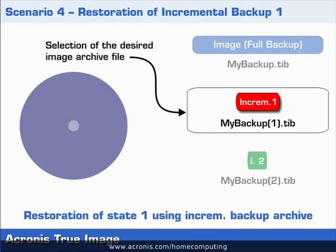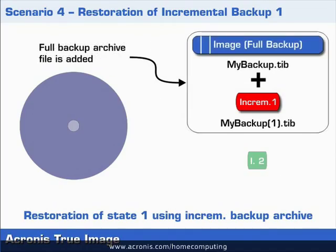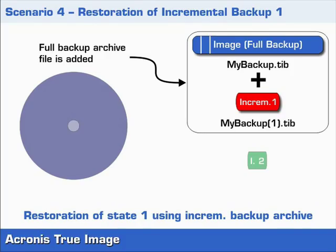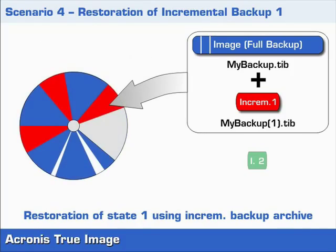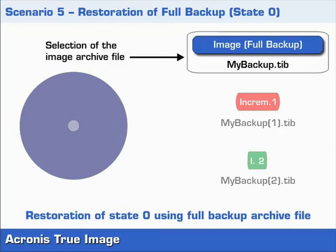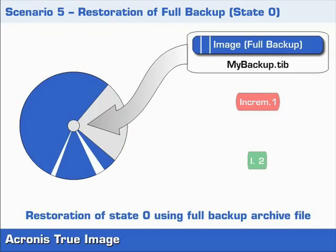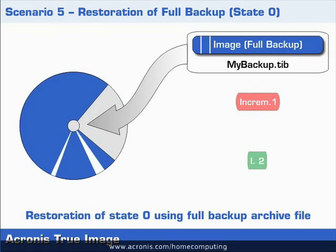The two remaining restoration scenarios can be explained quite quickly. Restoring state 1 starts with the selection of the red colored archive data and combines this data with the original full backup data. The program can then restore state 1 on the disk drive on the basis of these two datasets. Backup 2 is not needed in this case. Scenario 5, where we restore state 0, is even easier — for this scenario we only need the archive data from the full backup. The two incremental backup files play no role. So much for the concept of incremental backups.